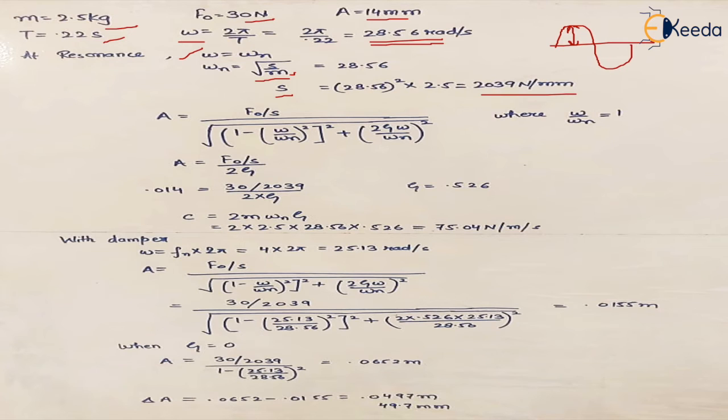Now we know the amplitude in case of the forced damped vibrations is given by this equation, we have already derived it but in this case what we are given that omega upon omega n is 1. So the equation reduces to this and we are concerned with finding zeta. So amplitude is known which is 14 mm, right? F0 is known, S is known as we have calculated here and we can easily find the value of zeta which is 0.526.